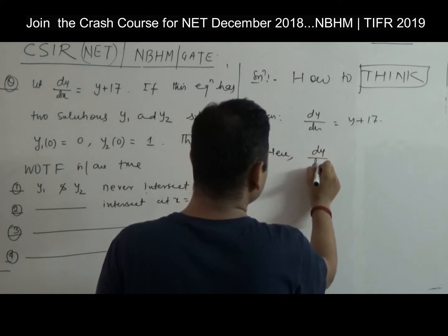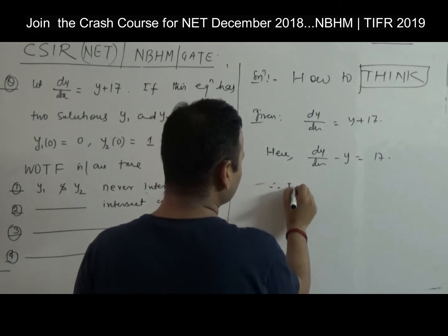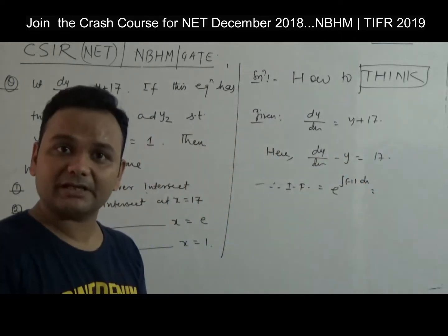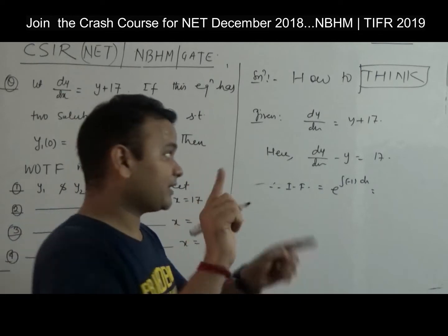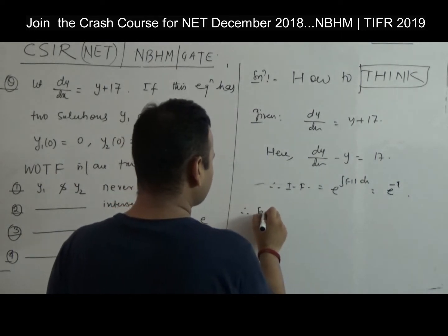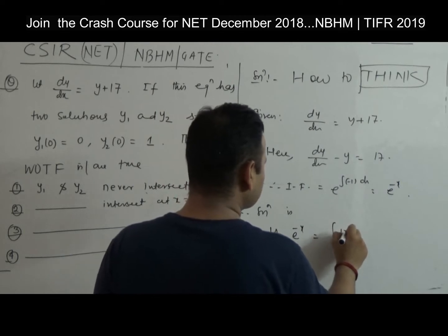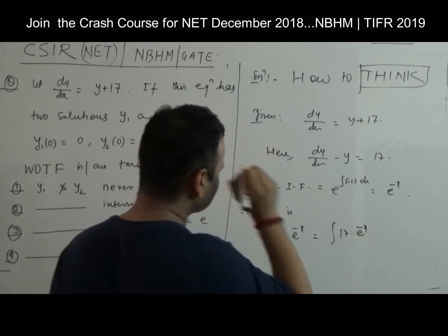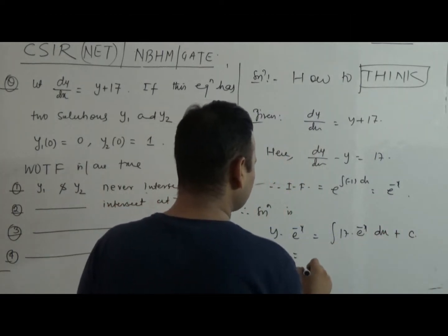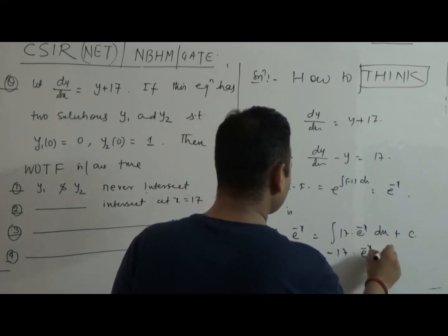So here, dy/dx minus y = 17. The integrating factor is e to the power of the integral of minus 1 dx — since P(x) = minus 1 — which gives e to the power of minus x. Therefore the solution is: y times e^(−x) equals the integral of 17 times e^(−x) dx plus constant, which gives y = minus 17 plus C·e^x.